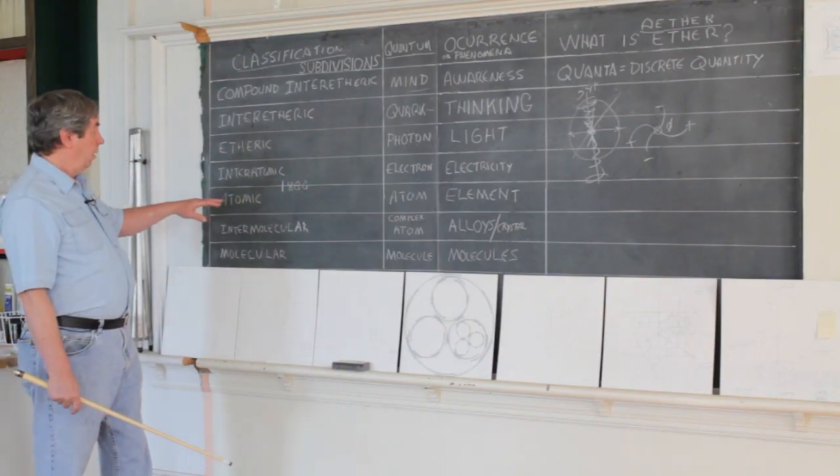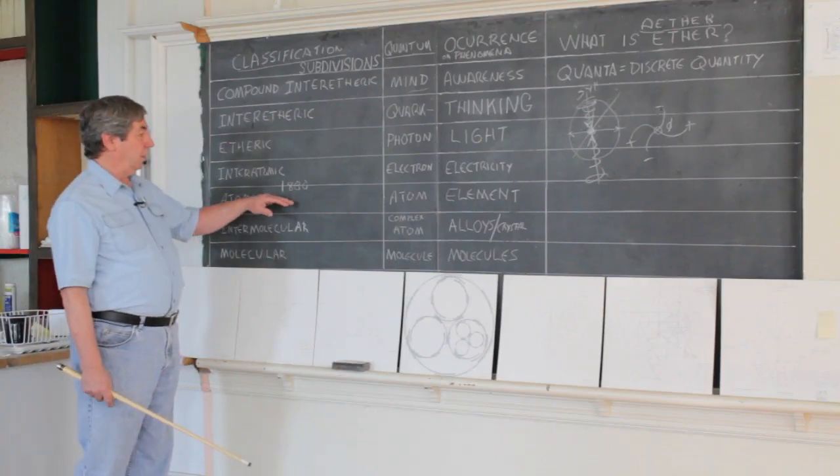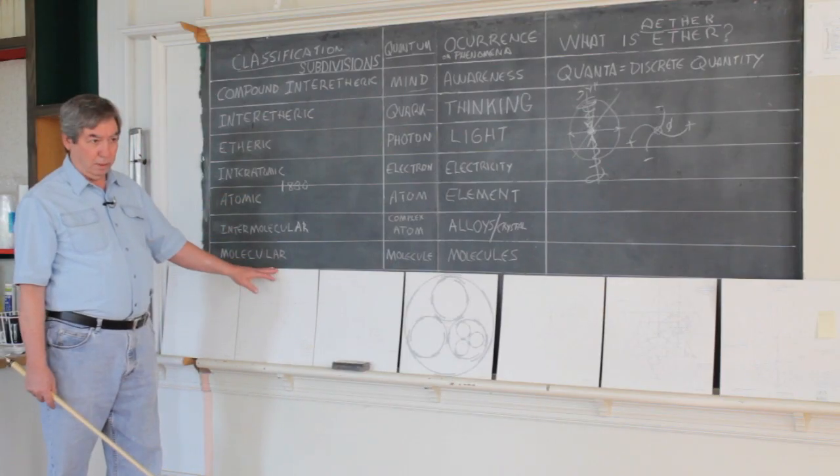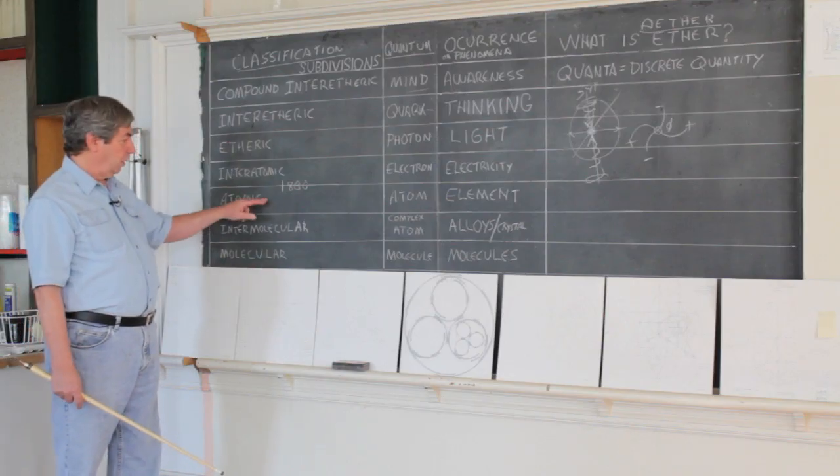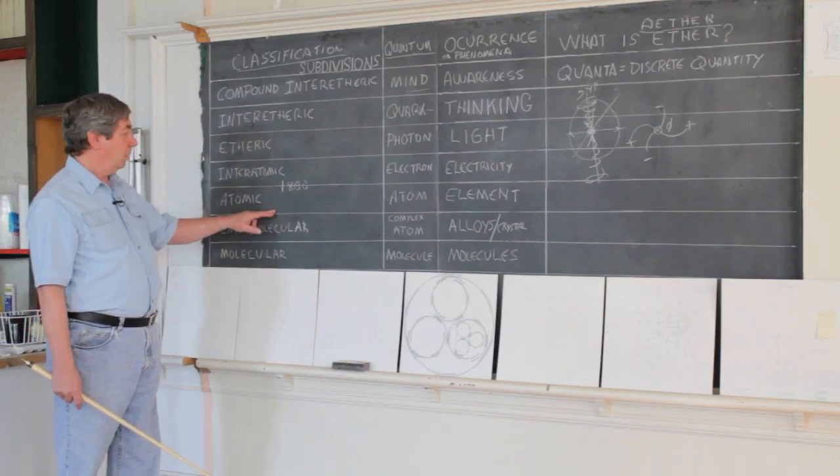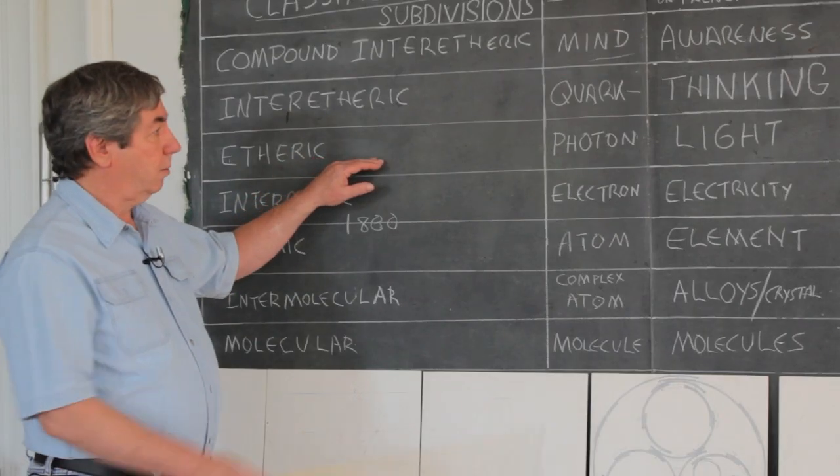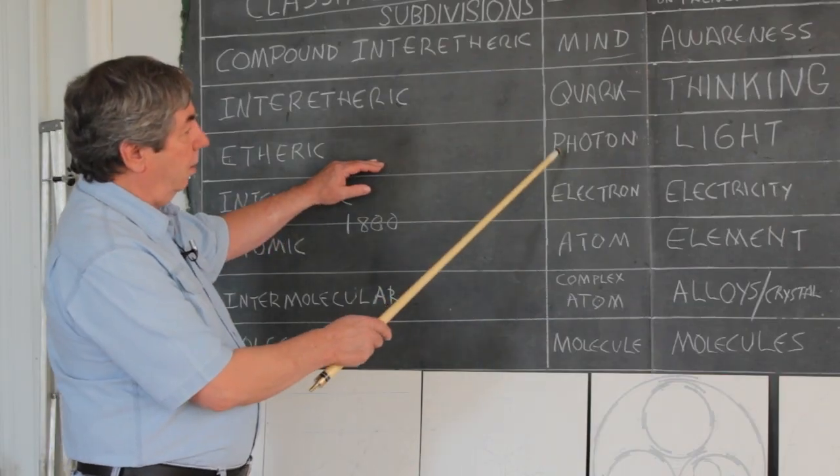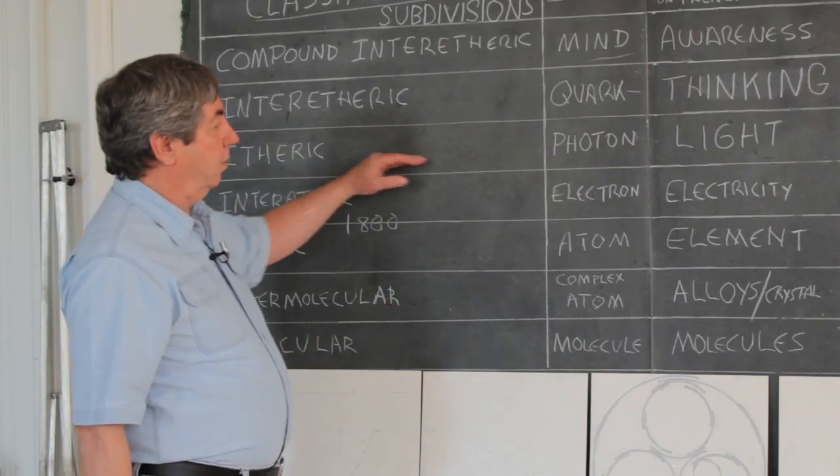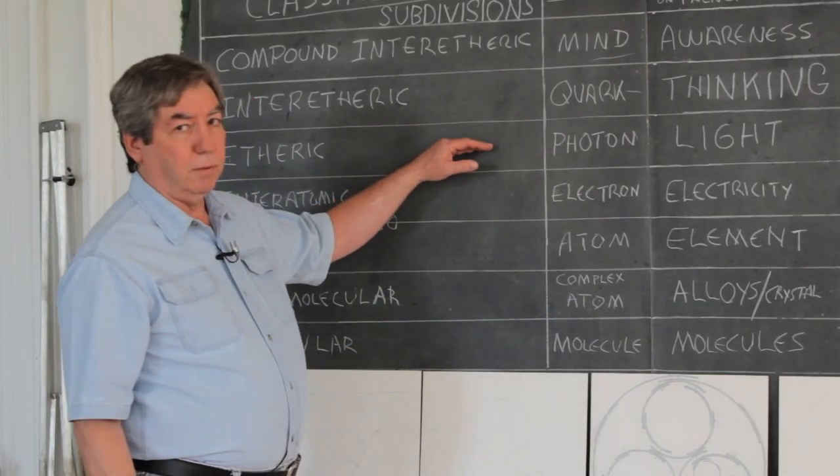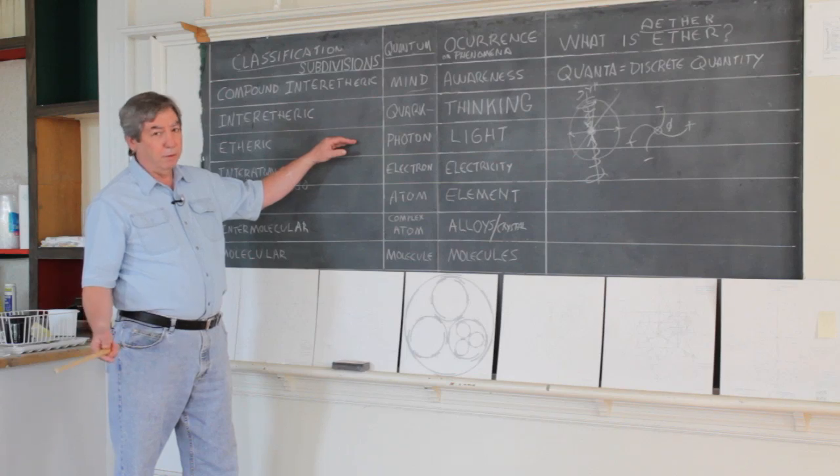Keeley however did. He was able to take molecular water, dissociate it into its hydrogen and oxygen atoms, dissociate those into photons. Photons make up electrons, so he got to the photon level which was called luminiferous ether.